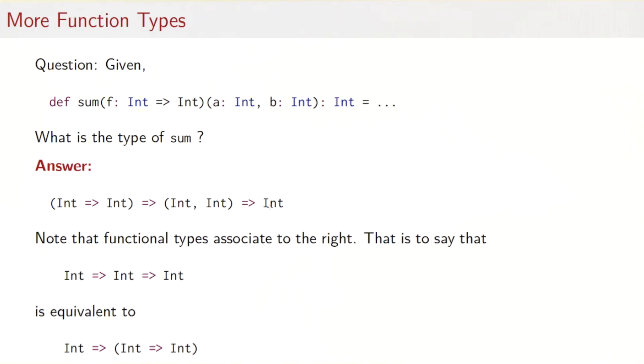So note that functional types associate to the right. Here I could have written also a type like this. So we take the int to int function and we return this function, but this blue parenthesis here are actually redundant. Because in general, a type such as int arrow int arrow int is read as int arrow and then the second pairs of ints are in parenthesis. So we put the parenthesis for function types on the right.